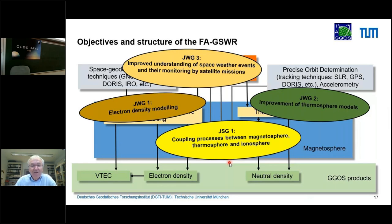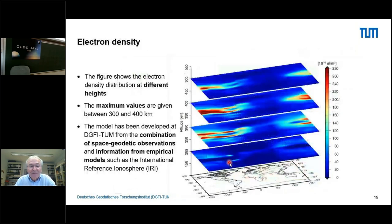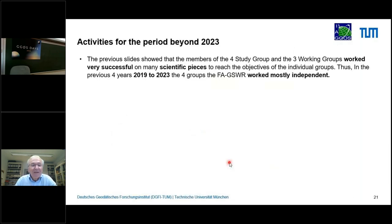Current GGOS website products include a map of vertical total electron content, an electron density product, and a thermosphere product, illustrating how these products look to users.